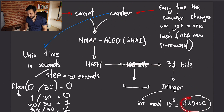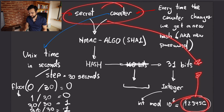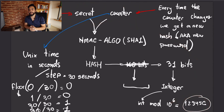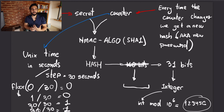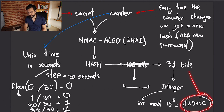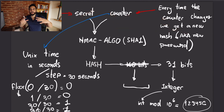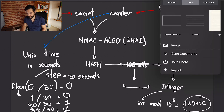All you need to do is generate one of these codes, send it to the server — the server also generates theirs and sees if they match. If they match, you're good. You might be a little offset because your clock isn't perfectly synchronized, so rather than failing the user, you calculate this value for the current counter, the counter before, and the counter after — giving some room for imperfect synchronization.